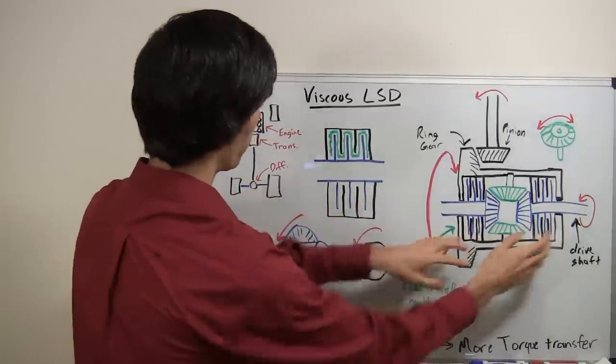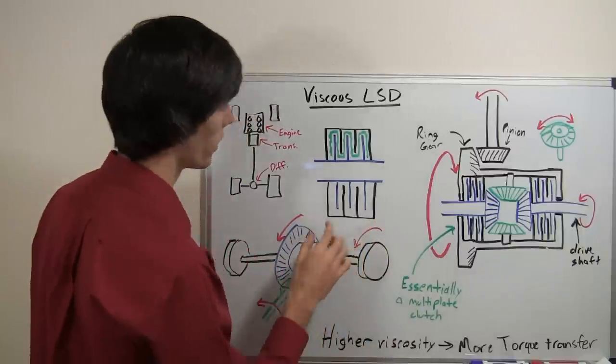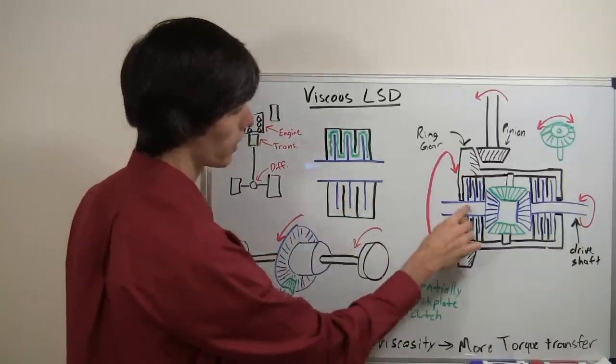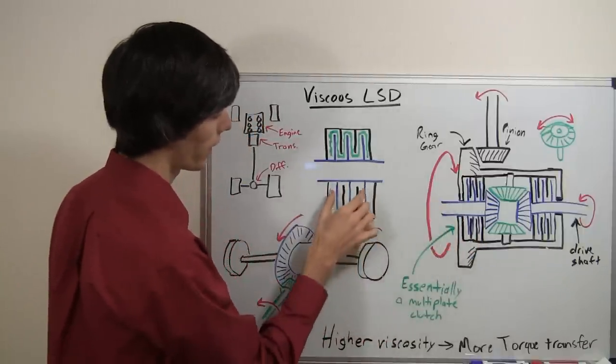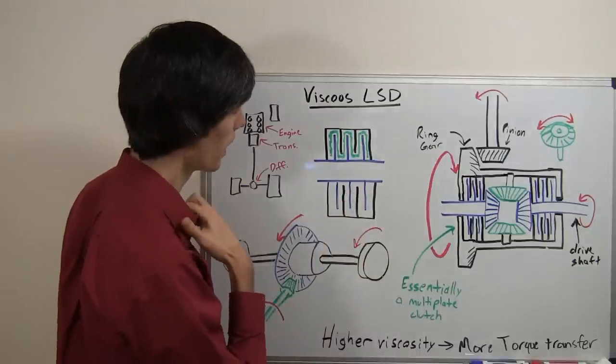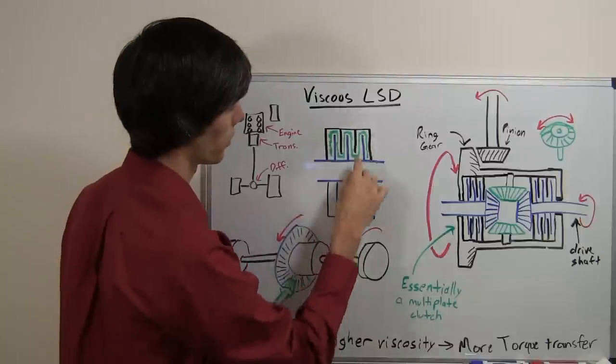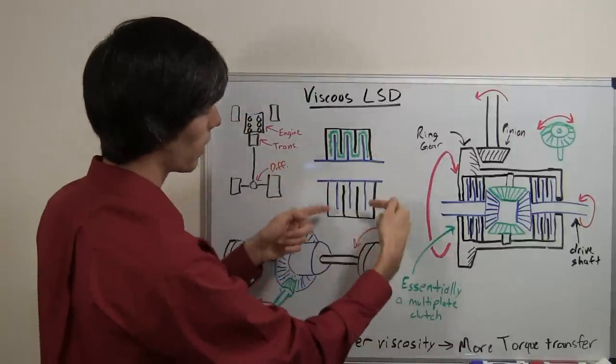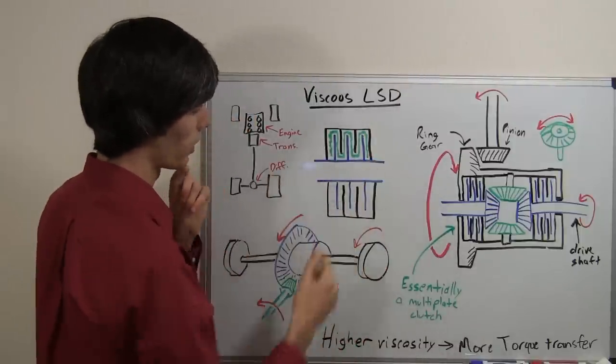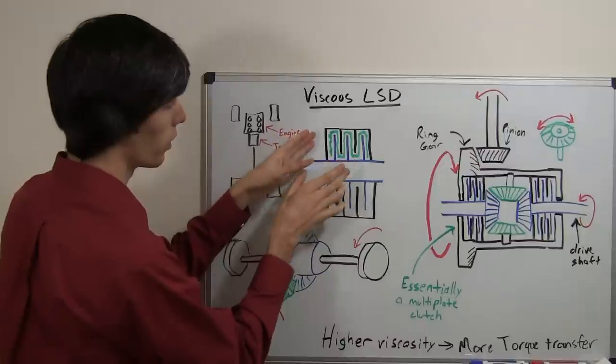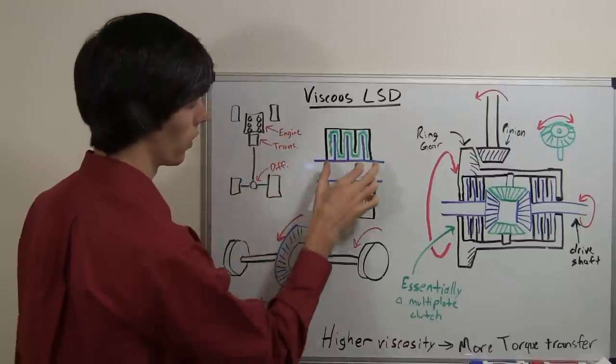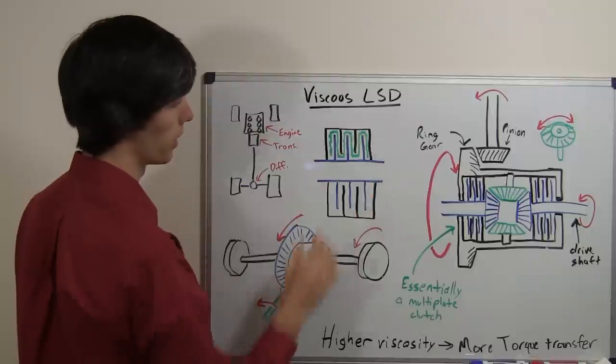So you've got these two viscous couplings. What's going on inside of there is you've got the drive shaft in blue here and that has these little plates coming off of it. And then you've got the differential housing in black and that also has plates coming off of it. So everything in black rotates together and everything in blue rotates together, and these can rotate at different speeds so the blue can rotate at different speeds than the black.